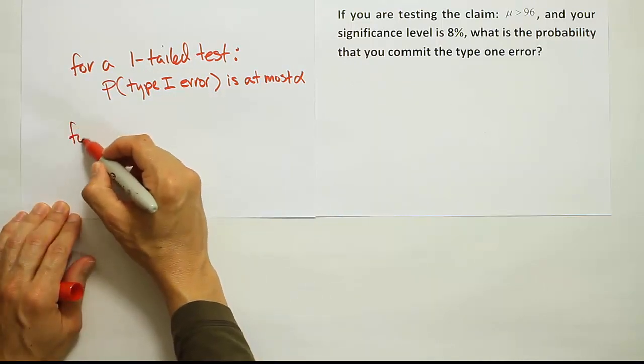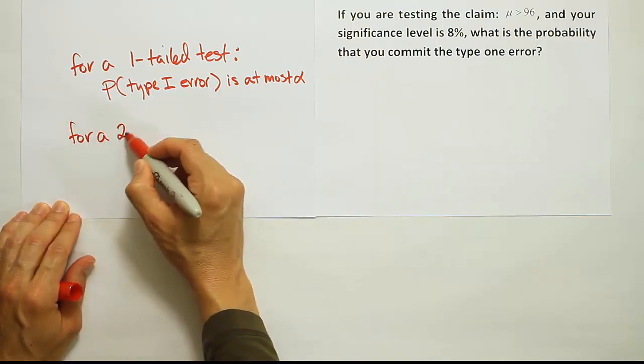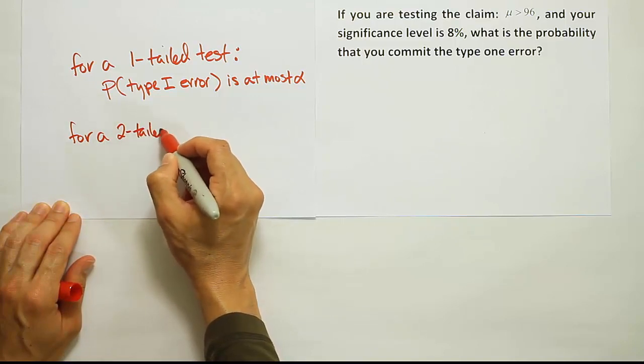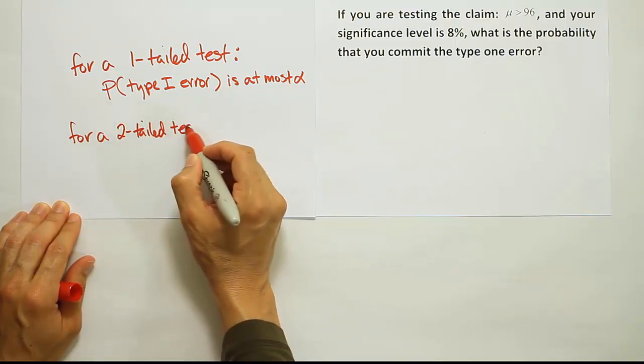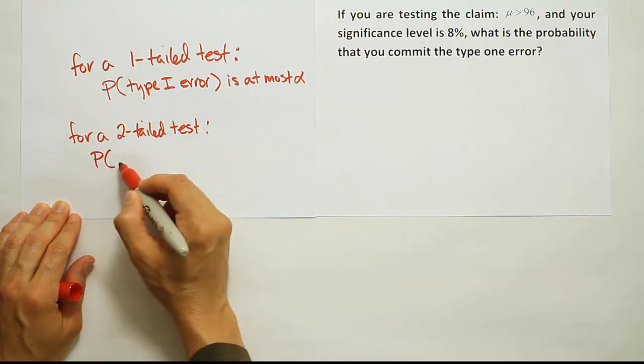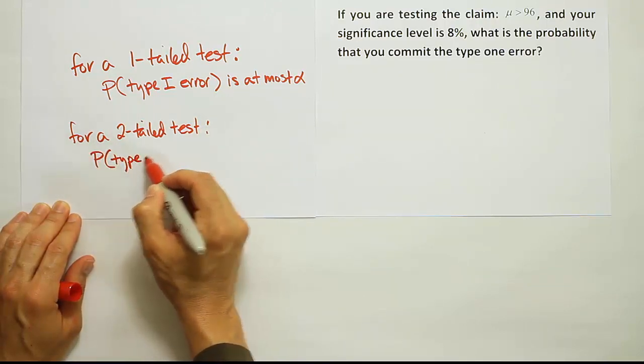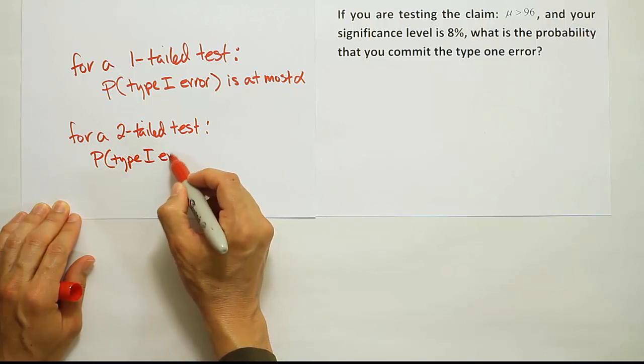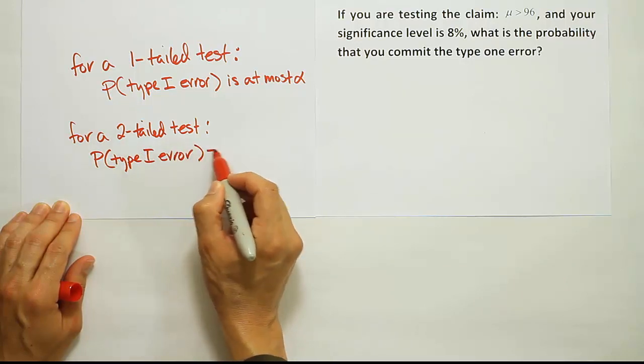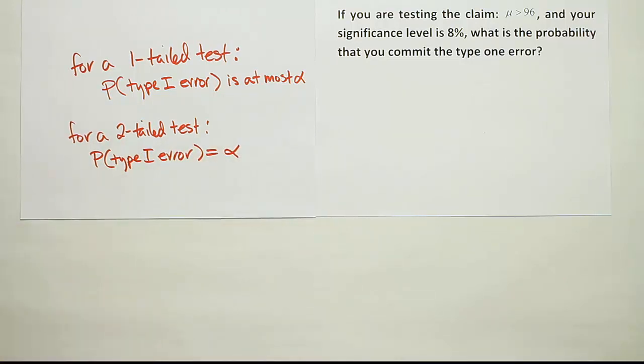For a two-tailed test, the probability of a type 1 error is equal to alpha.